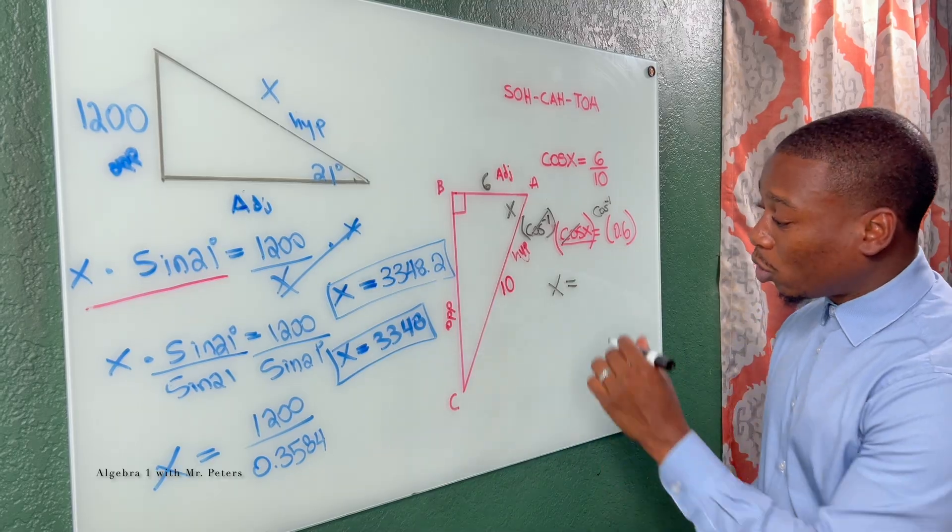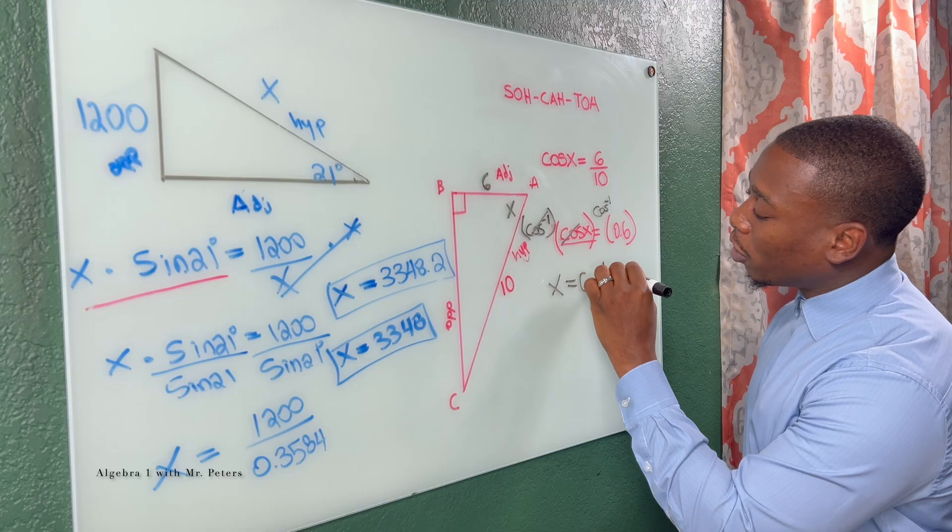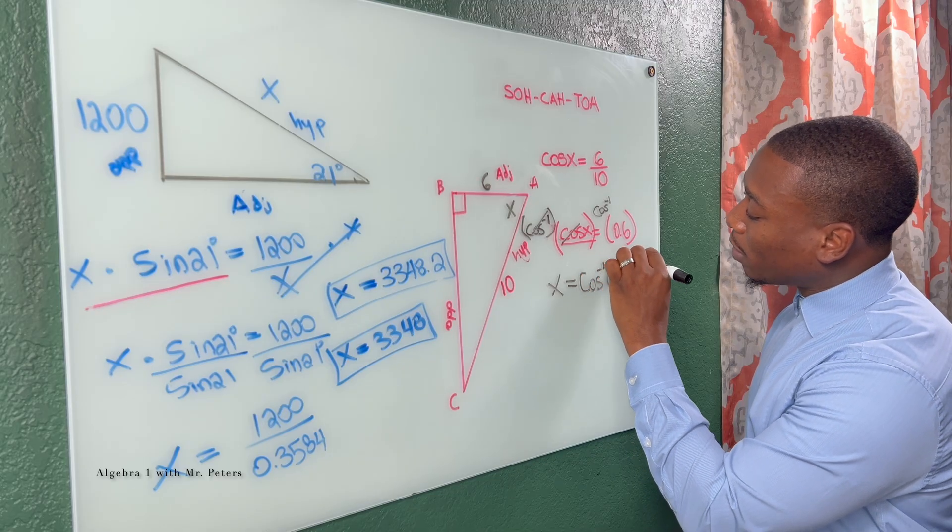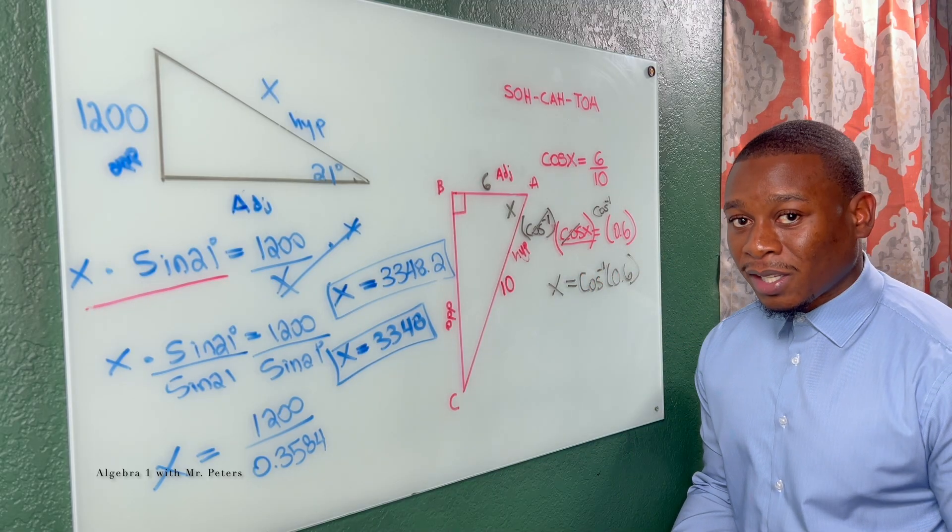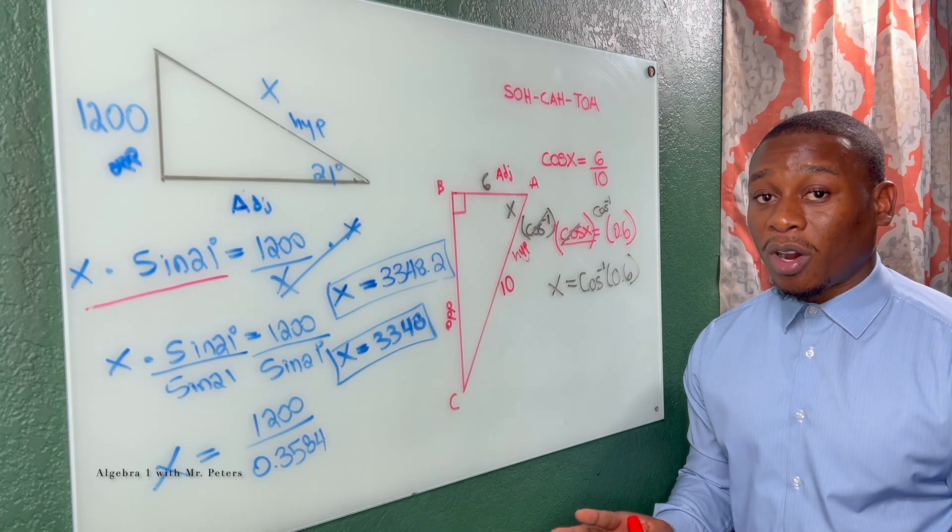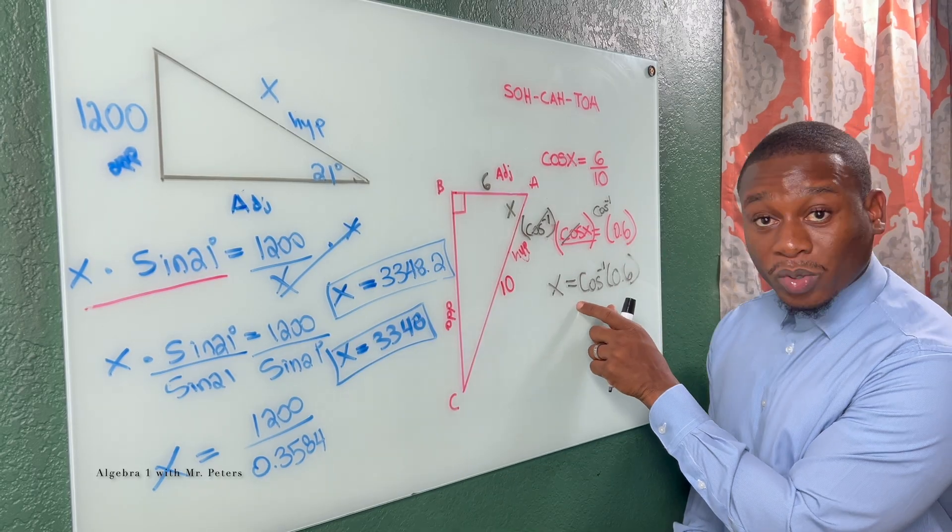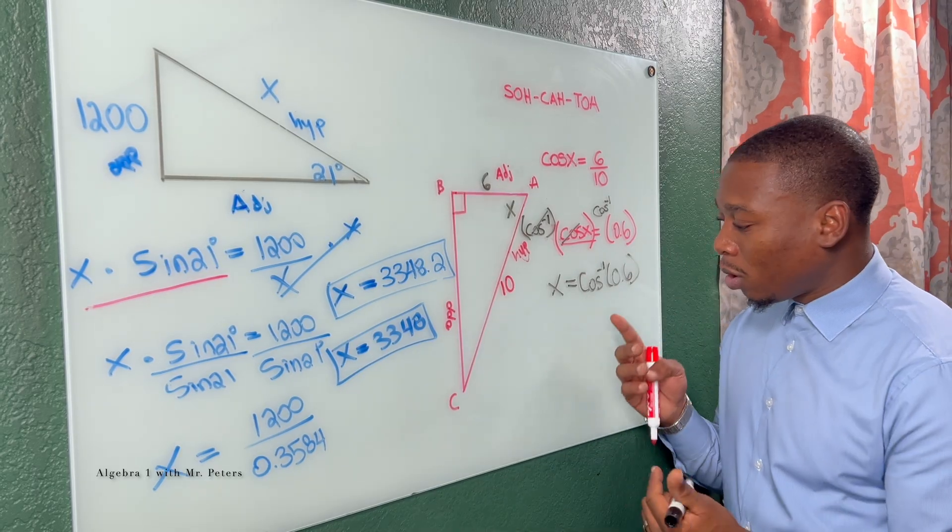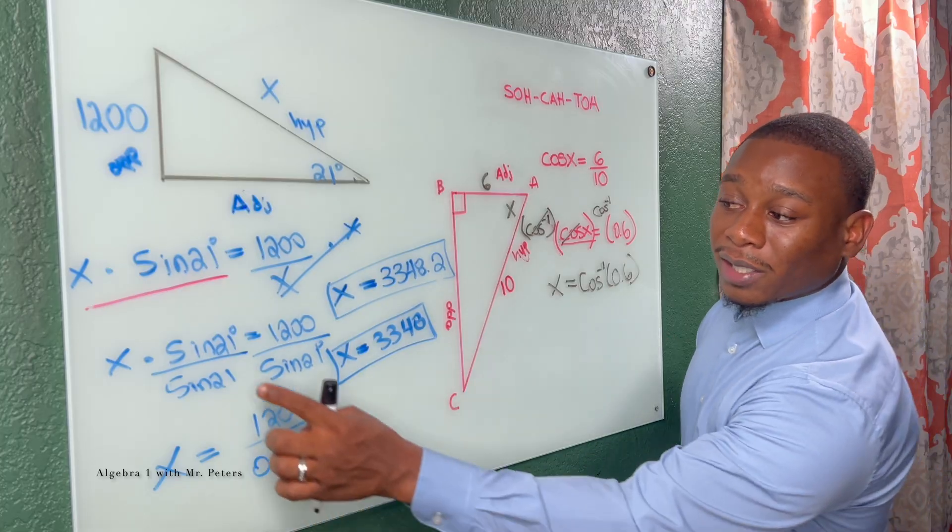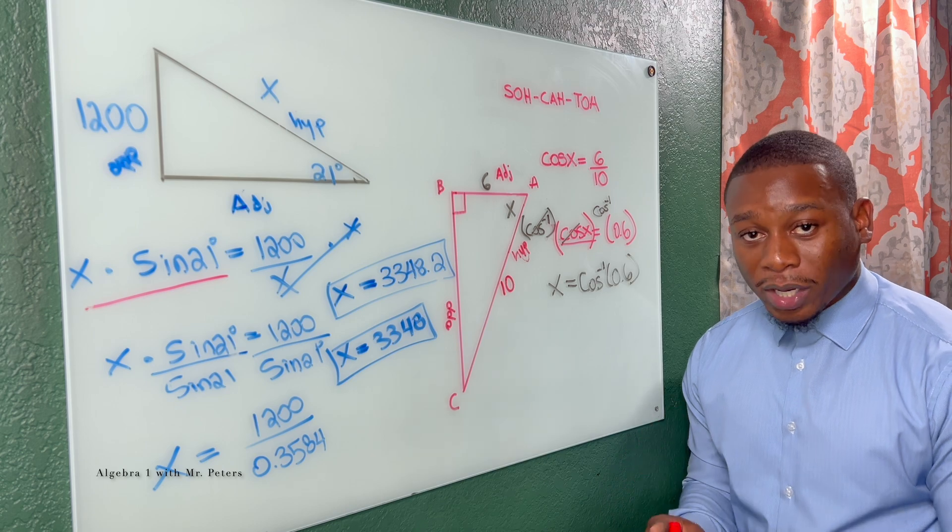Now we know X is equal to what? The inverse function of cosine times that 0.6. So this is the number one reason why students get inverse trig functions wrong. They think they're supposed to divide 0.6 by cosine, but there's no number attached to it. It's not like sine 21. So please make sure you avoid that error.